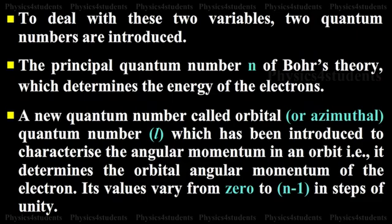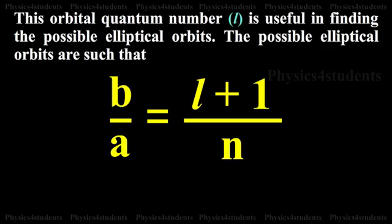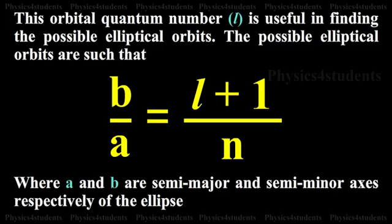The orbital quantum number determines the orbital angular momentum of the electron. Its values vary from 0 to n-1 in steps of unity. This orbital quantum number is useful in finding the possible elliptical orbits. The possible elliptical orbits are such that b/a is equal to (l+1)/n, where a and b are the semi-major and semi-minor axes respectively of the ellipse.